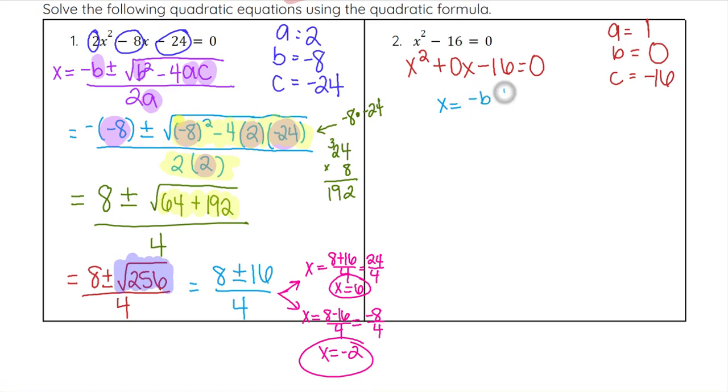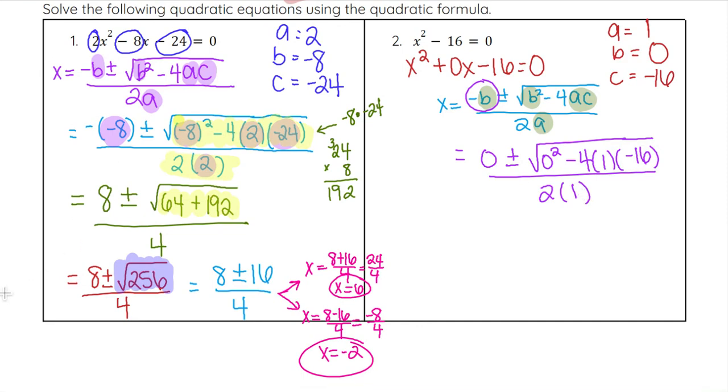When we plug into the formula, we do it exactly like the last one, but when you plug in for b, it's 0. So we have negative 0, which is just 0, plus or minus the square root of 0 squared minus 4 times 1 times negative 16, all over 2 times 1.